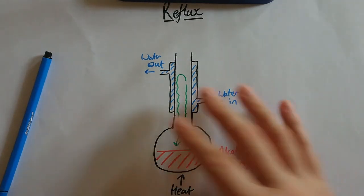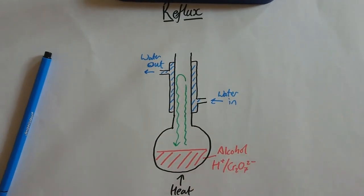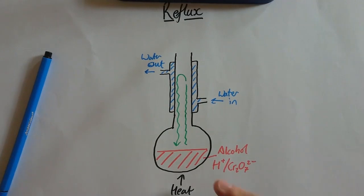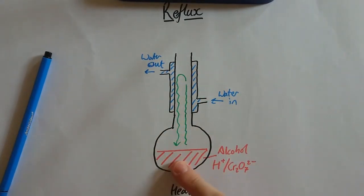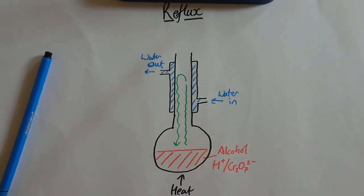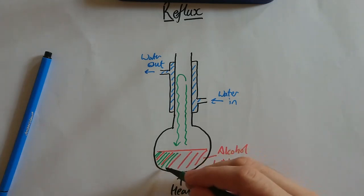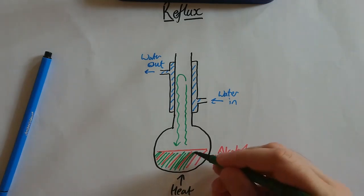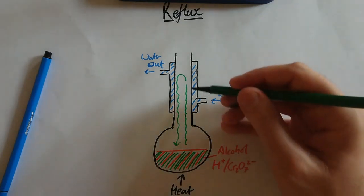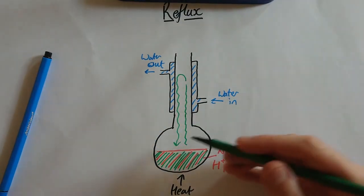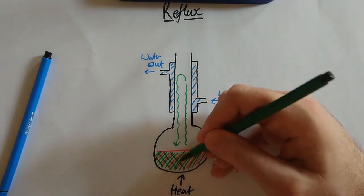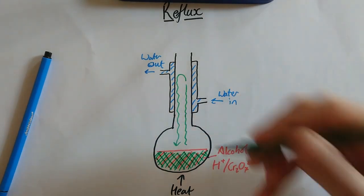None of this aldehyde is escaping. We're not collecting any of it down here like we do with distillation. It's just going straight back into your reaction vessel. So all of this, by the end, will have become an aldehyde. It will have gone up through the condenser, back down, and then become a carboxylic acid. And there should be no alcohol left and no oxidizing agent left. And it will just be carboxylic acid. And we can think about how we can test for that later.